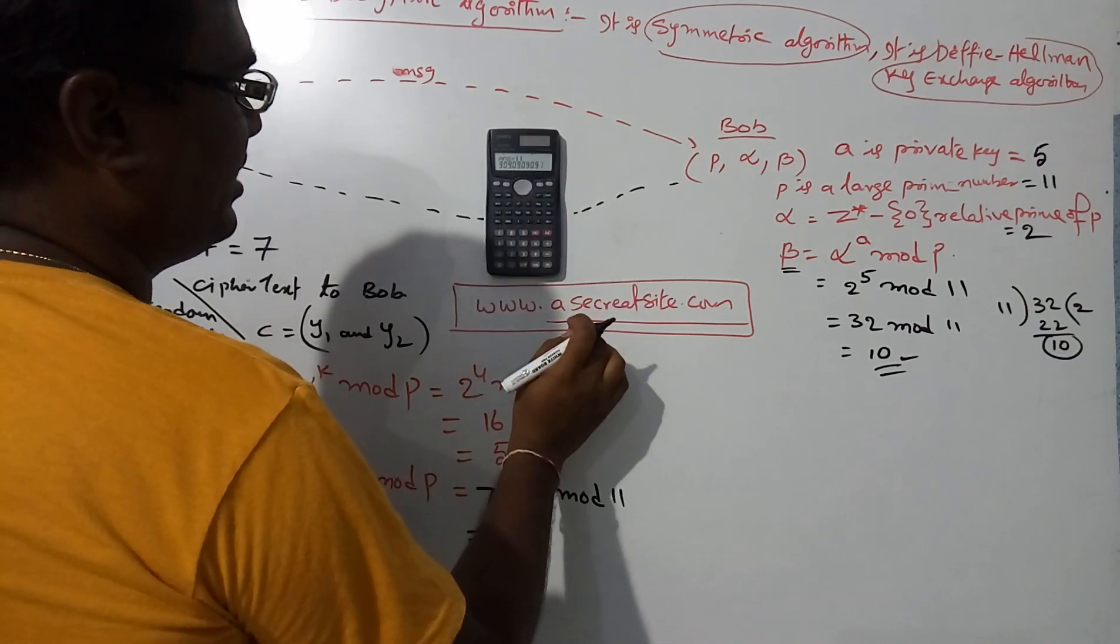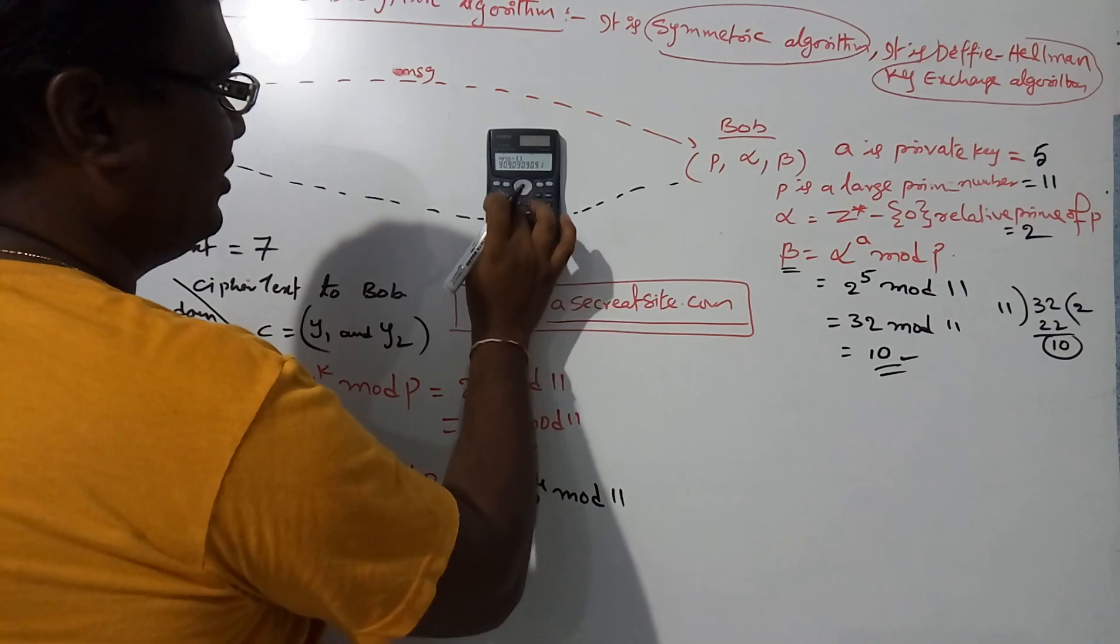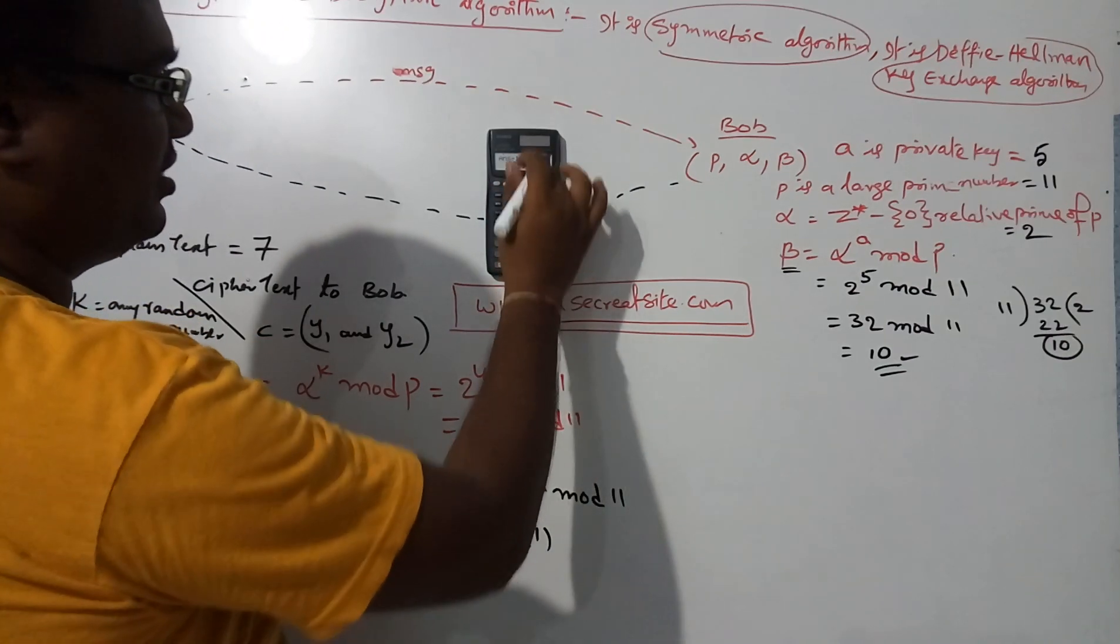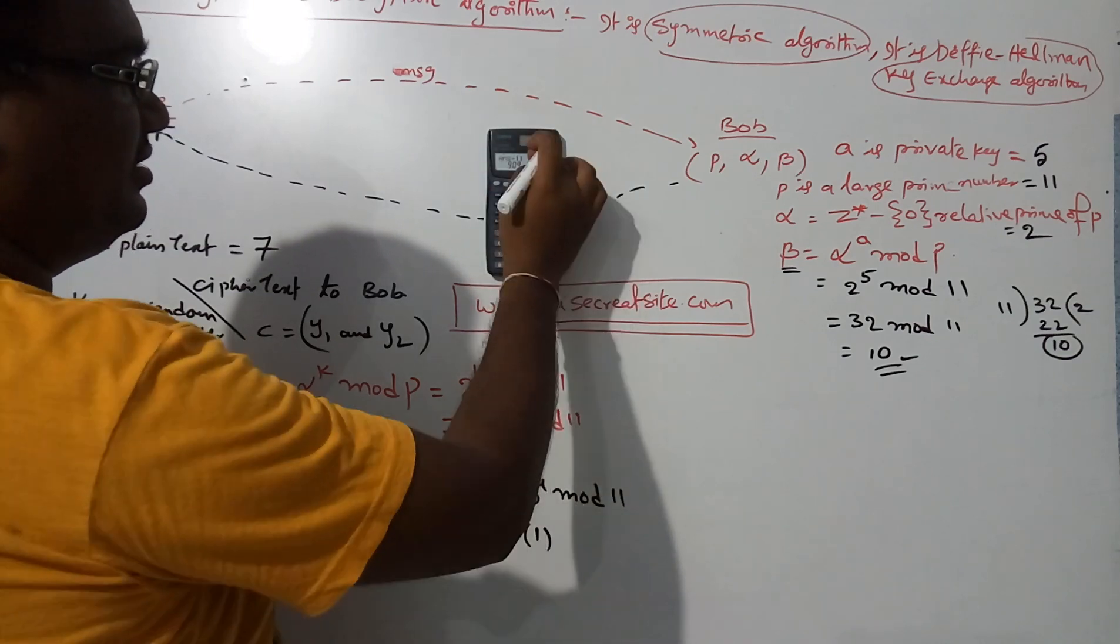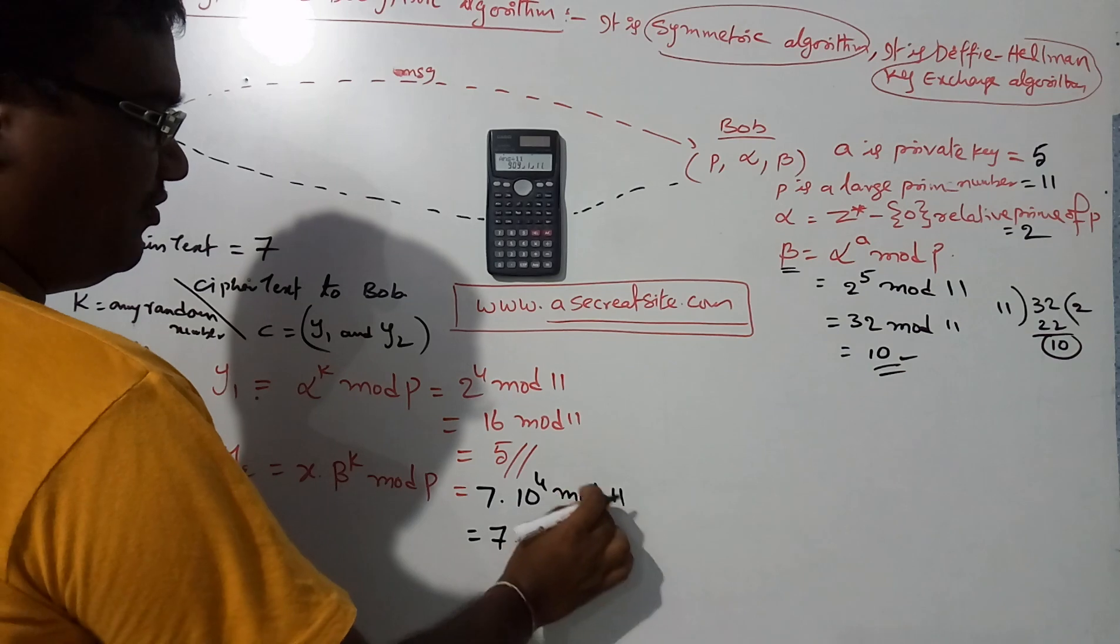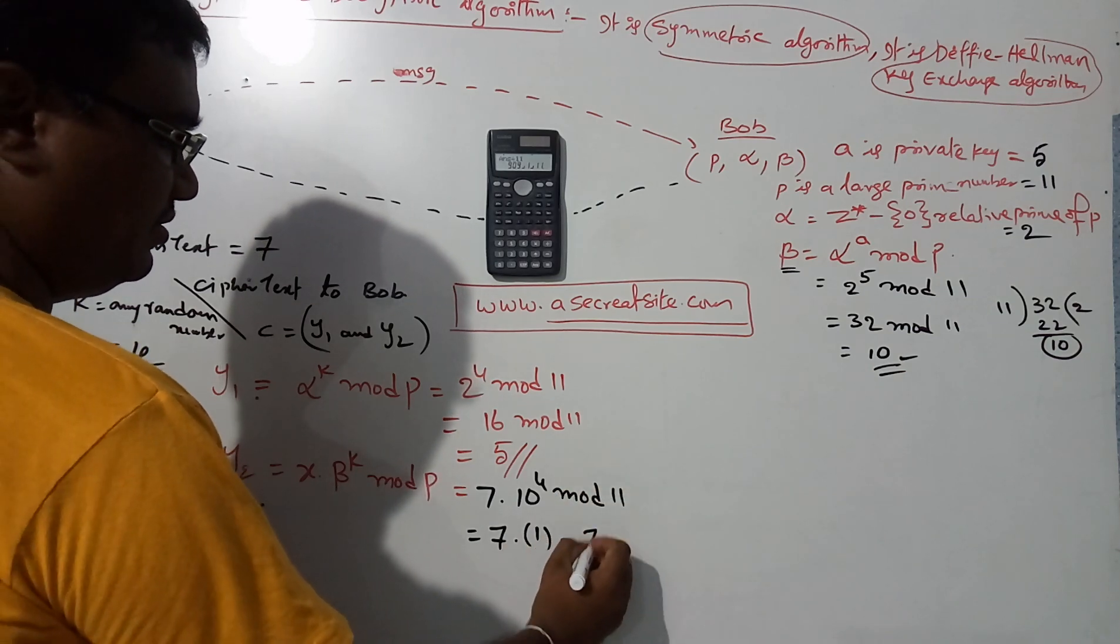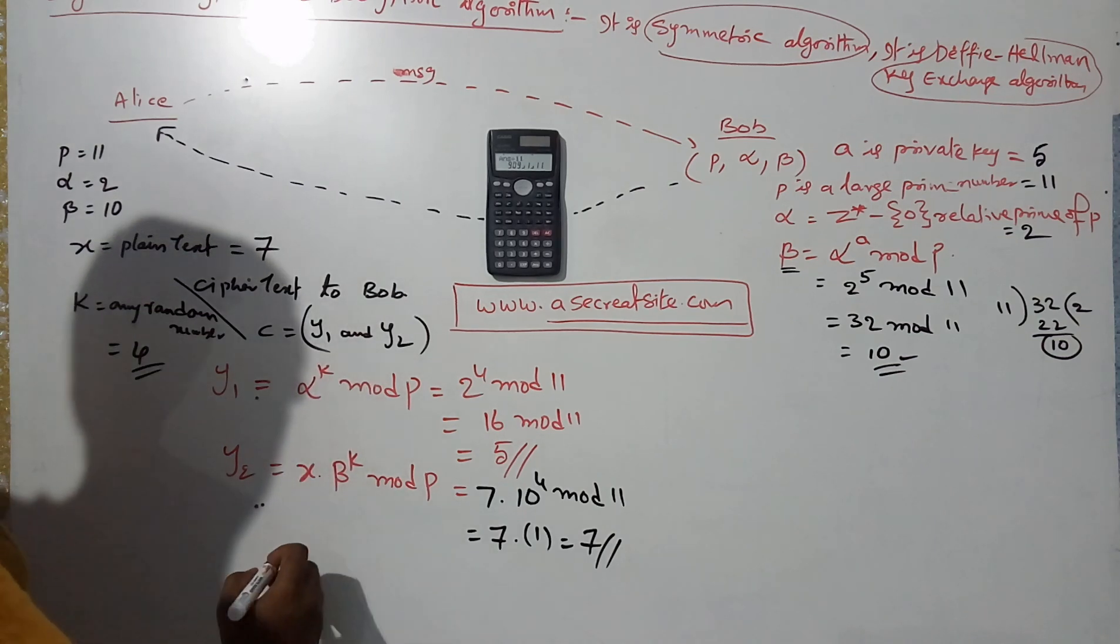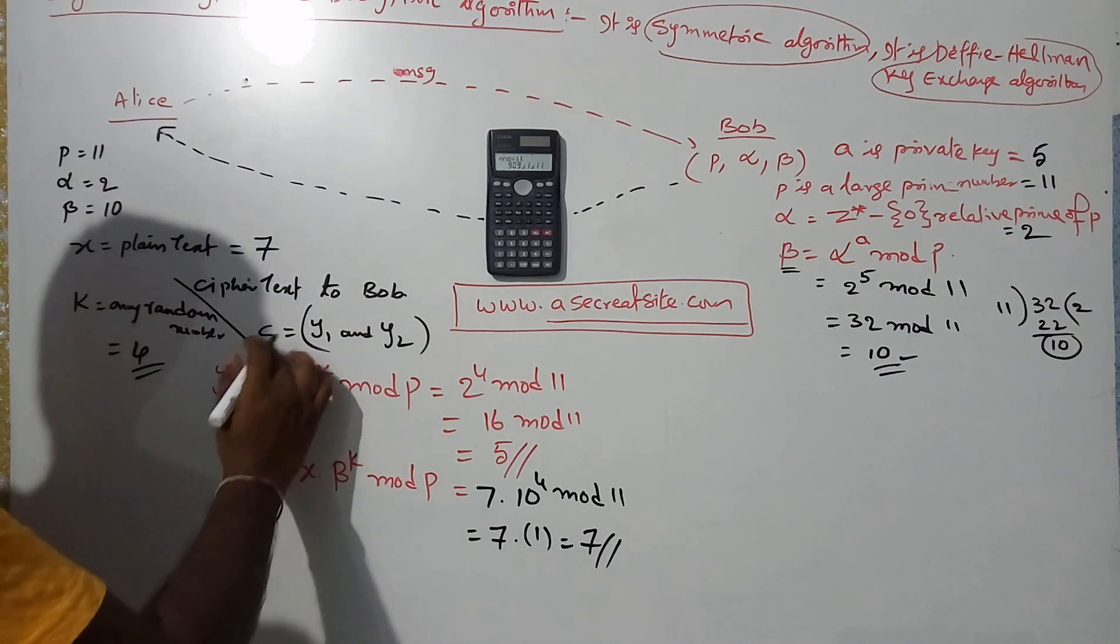10 power 4 equals 10,000. You divide by 11, you get 909.09. Simply press a divided by c; the remainder is 1.